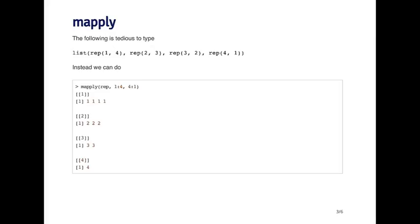For example, I'm creating a list: repeat 1 four times, repeat 2 three times, repeat 3 two times, and repeat 4 just once. It's a bit tedious to type out manually, but with mapply it's quite simple. I can just do mapply(rep, ...). rep is the repeat function and it takes two arguments. The first set of arguments is 1 through 4, and the second set is 4 through 1. And you can see that I get my list of four 1s, three 2s, two 3s, and one 4 — just like the manually created list above.